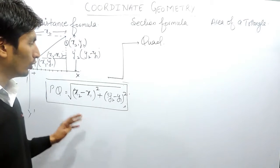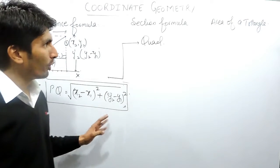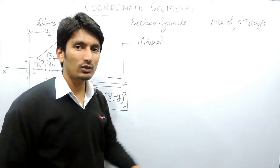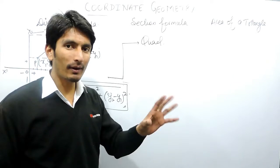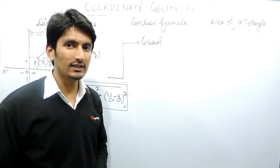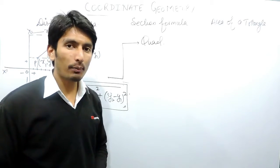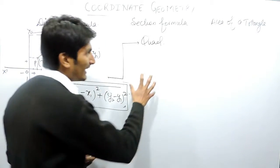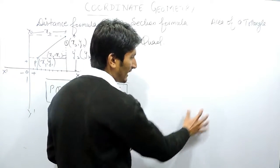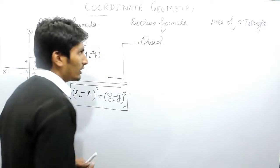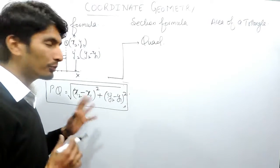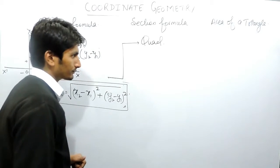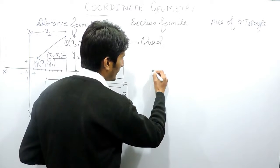One thing is important here: instead of writing all the properties of all the quadrilaterals and asking you to memorize them, what should be done is we must relate the quadrilaterals between themselves. Using those relations we can remember the properties of one quadrilateral with the other. For example, the first quadrilateral is a parallelogram.